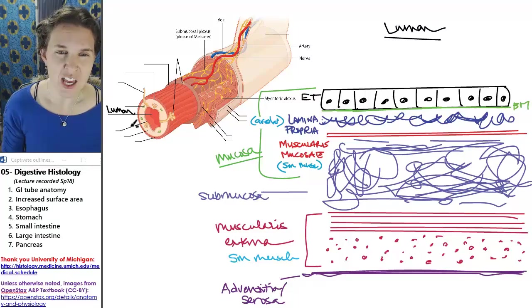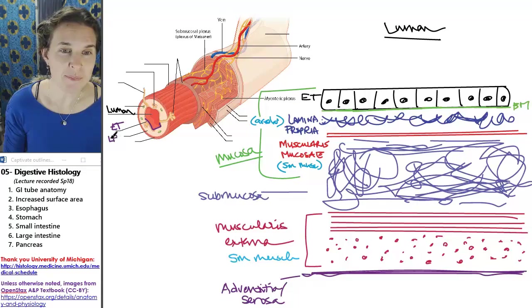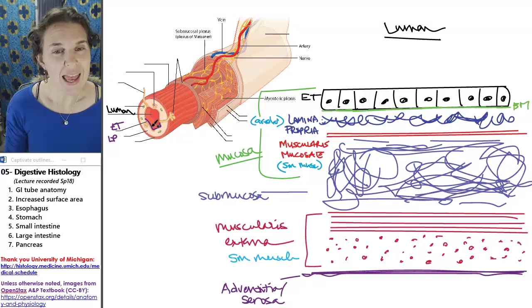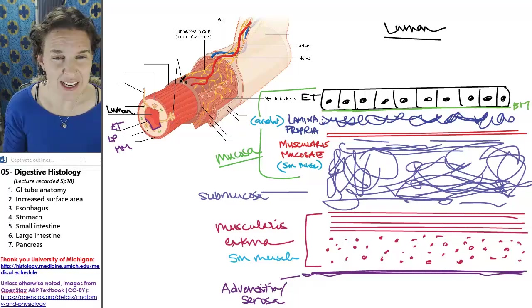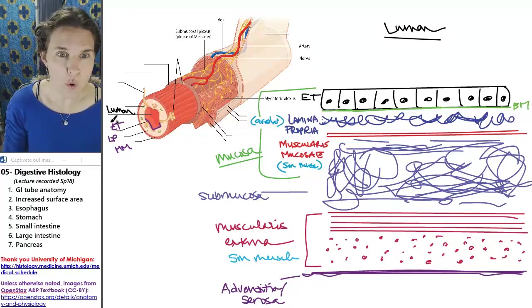You can see that lining the lumen is epithelial tissue. So this edge is epithelium. What was basal to the epithelium? That would be lamina propria. That looks like a connective tissue like who knows what. And then basal to that was muscularis mucosae. That's made out of smooth muscle most of the time. This whole thing made up the mucosa.